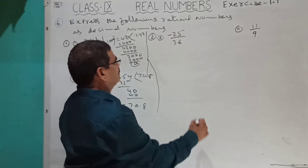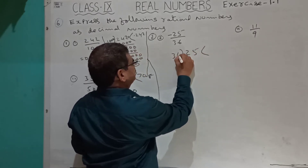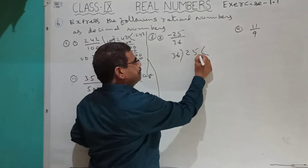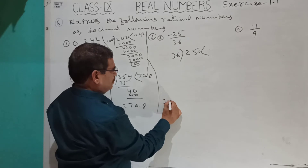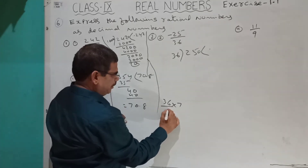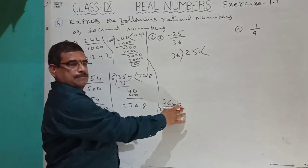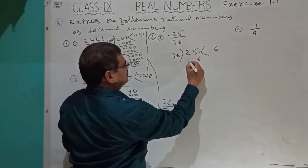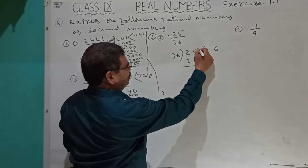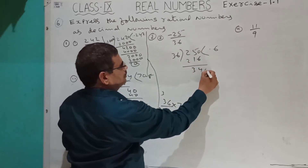For minus 25 by 36, divide 25 by 36. Since 36 doesn't go into 25, put a decimal point and add 0, making 250. Try 7: 36 into 7 gives 252, which is too big. So try 6: 36 sixes are 216, remainder 34. Bring down a 0 making 340, try 9: 36 nines are 324, remainder 16.